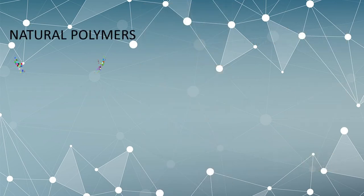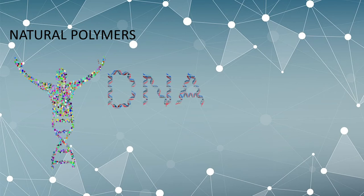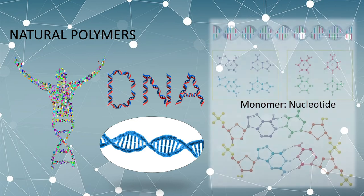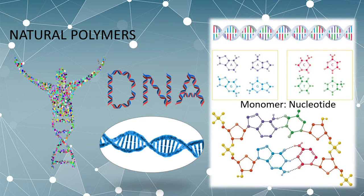Every cell of our body contains DNA, deoxyribonucleic acid — the genetic material in humans and almost all other organisms. The monomers of DNA are called nucleotides. Nucleotides have three components: a base, a sugar (deoxyribose), and a phosphate residue. The four bases are adenine, cytosine, guanine, and thymine.